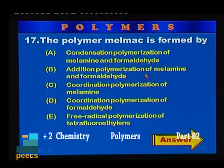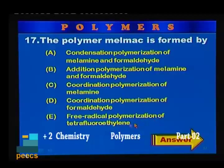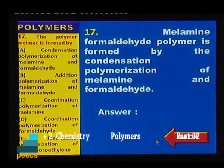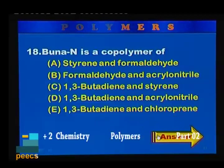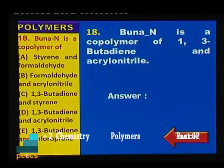Sample question 17: The polymer Melmac is formed by: condensation polymerization of melamine and formaldehyde; addition polymerization of melamine and formaldehyde; coordination polymerization of melamine; coordination polymerization of formaldehyde; free radical polymerization of tetrafluoroethylene. Melamine formaldehyde polymer is formed by the condensation polymerization of melamine and formaldehyde, therefore the correct option is A. Sample question 18: Buna-N is a copolymer of: styrene and formaldehyde; formaldehyde and acrylonitrile; 1,3-butadiene and styrene; 1,3-butadiene and acrylonitrile; 1,3-butadiene and chloroprene. Buna-N is a copolymer of 1,3-butadiene and acrylonitrile, therefore the correct answer is option D.